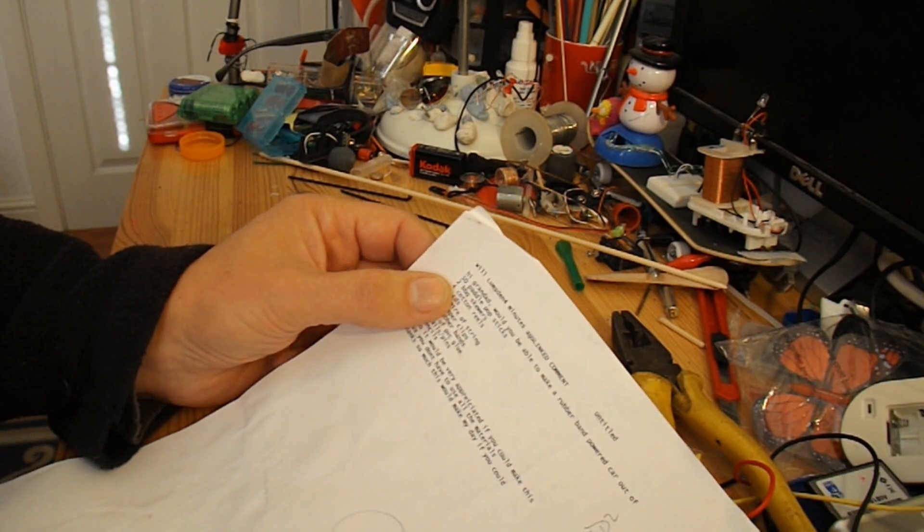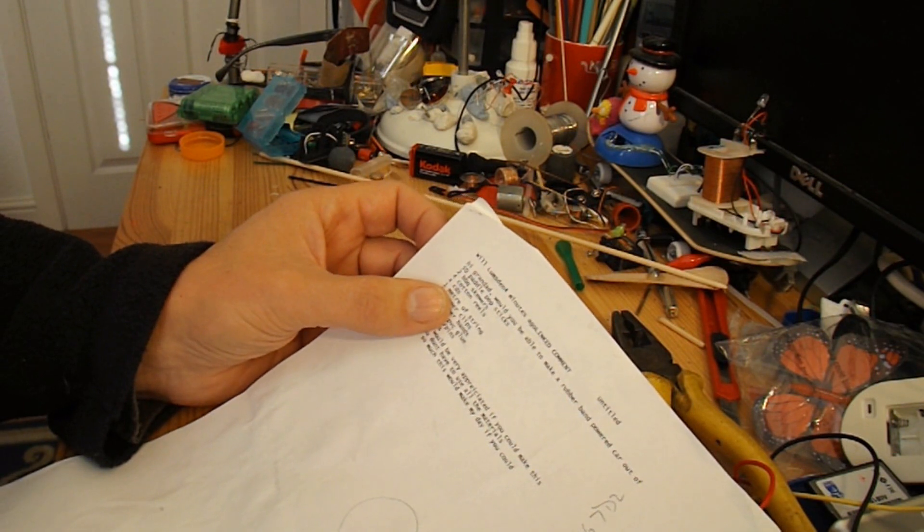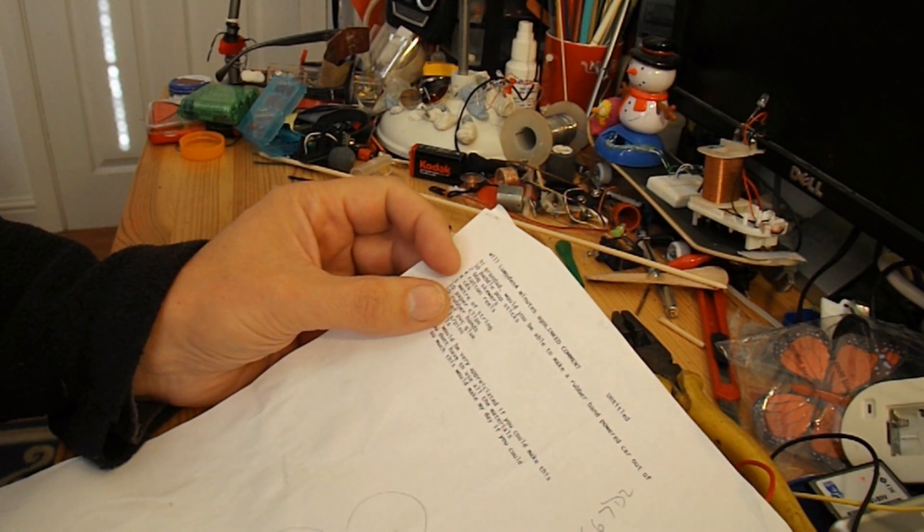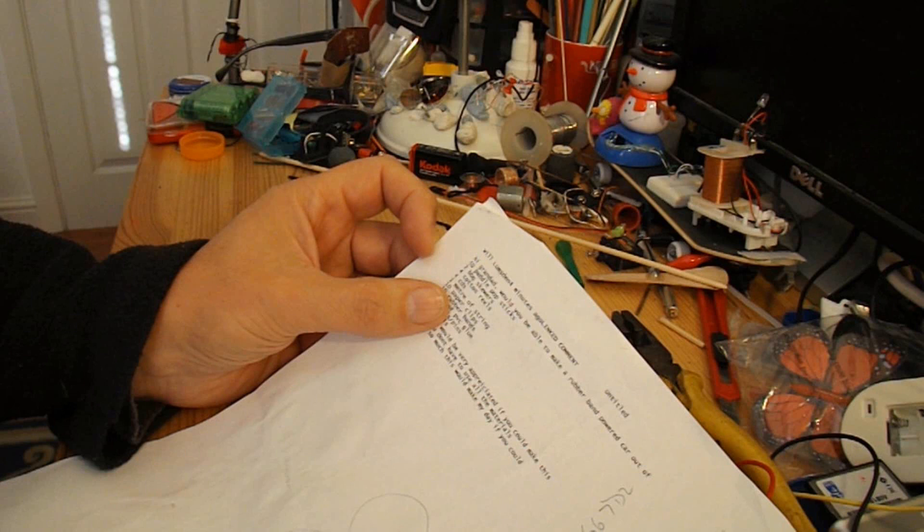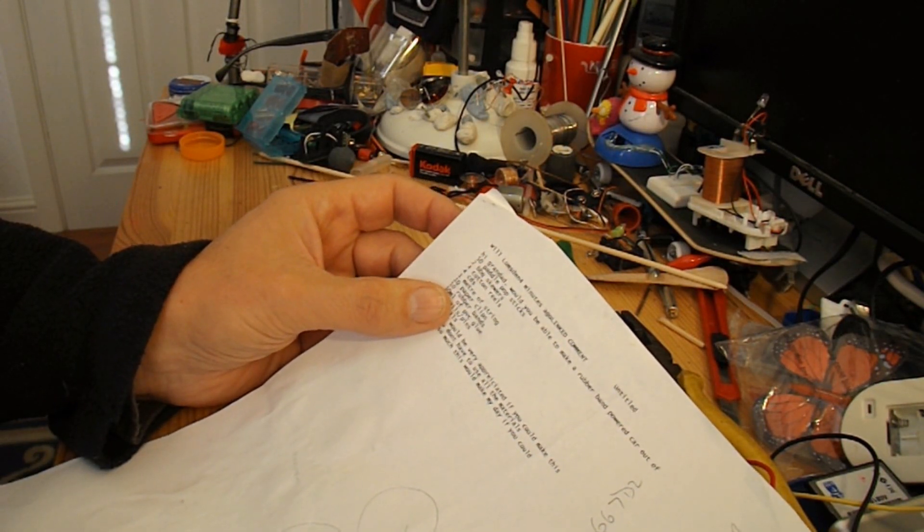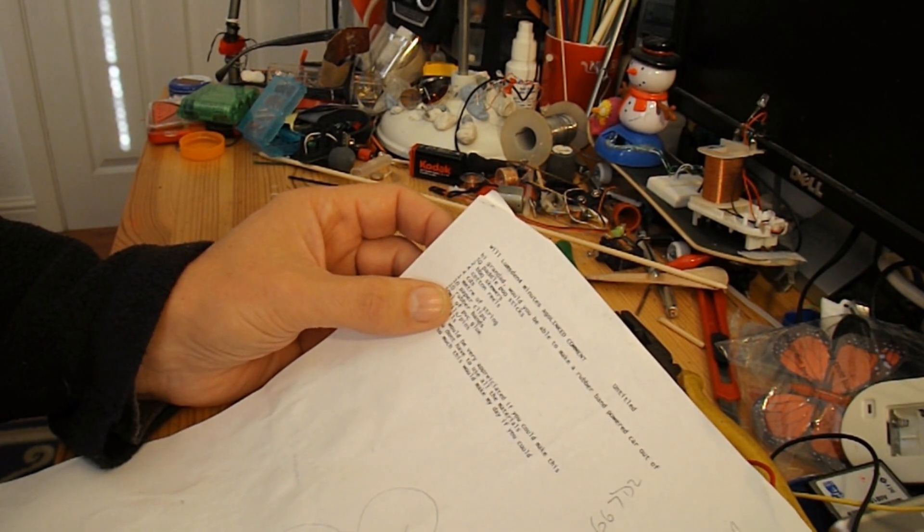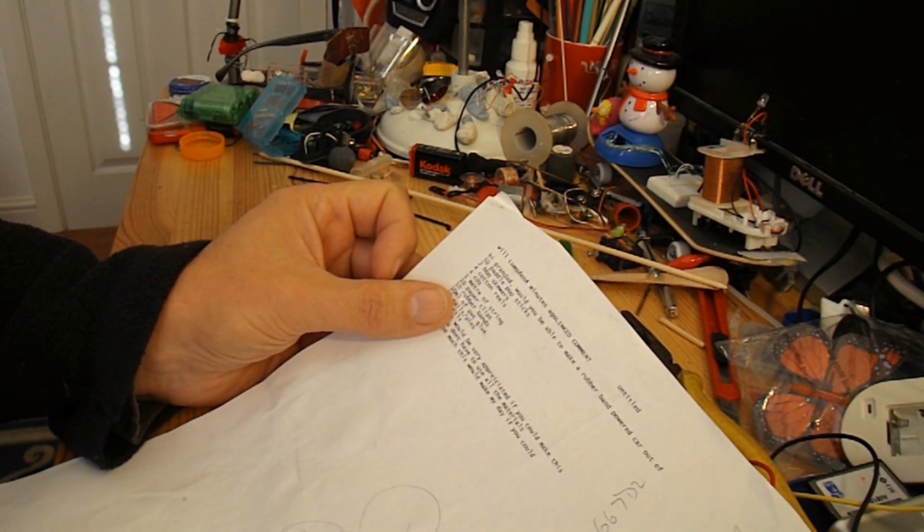The barbecue skewers, yeah, they'll be good. Cotton reels, yeah, I could probably use them. CDs, yeah, for wheels. Metre of string, don't think so. Ten paper clips, I could probably use maybe three or four, maybe five. Ten rubber bands, depends what size the rubber bands are.